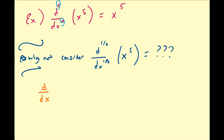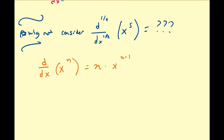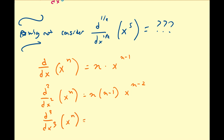The derivative of x to the n is going to be equal to n times x to the n minus one. The second derivative with respect to x of x to the n — we bring our n minus one down and subtract the exponent by one. And the third derivative of x to the n is going to be n times n minus one times n minus two times x to the n minus three.